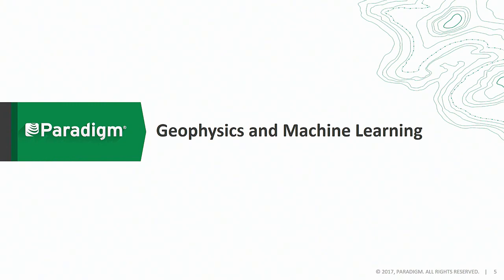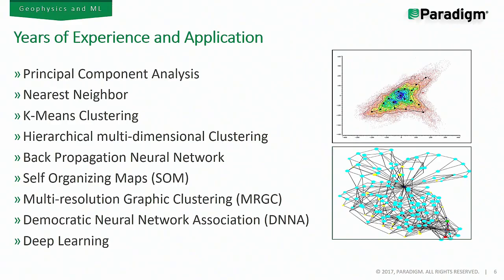I'm going to walk us through the first chapter on geophysics and machine learning, and then Zvi will pick this up and say a few words about a specific example. Paradigm's history with machine learning goes back actually 25 years with the licensing of some technology from ELF that made its way into our Stratomagic application. We've also had experiences with machine learning technologies developed by ENI and others developed internally in Paradigm.